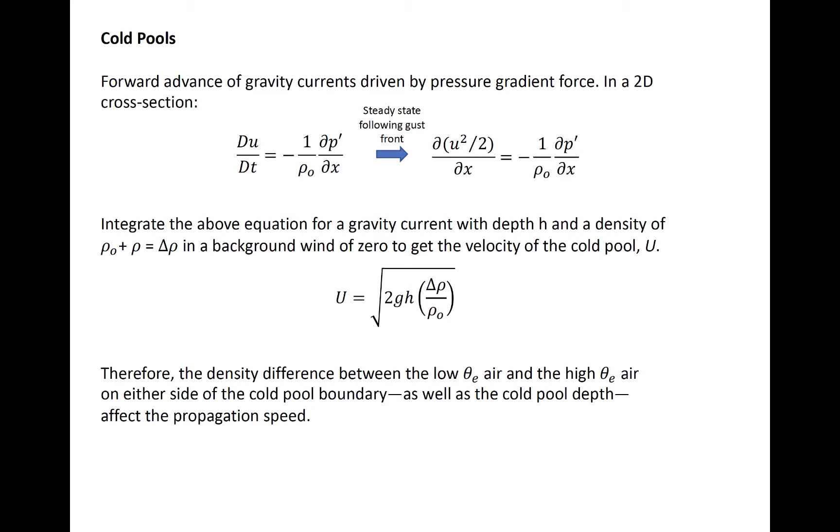The advance of gravity currents is driven by the pressure gradient force. Given a simple two-dimensional cross-section in the x and z directions only, and assuming a steady state, we can determine the propagation speed by starting with the horizontal momentum equation. Given some depth of the cold pool h and a density that is larger than environmental density by delta rho, the forward propagation speed of the gravity current is related to the phase speed of a gravity wave, modified by the density difference.